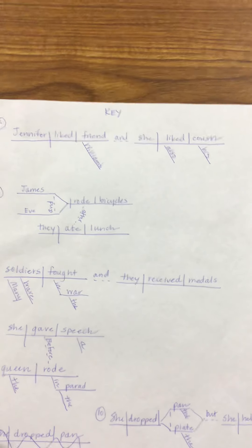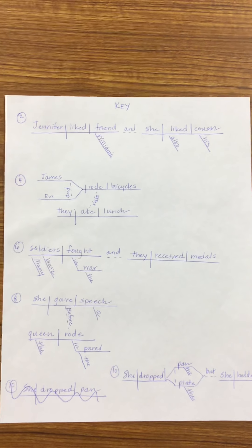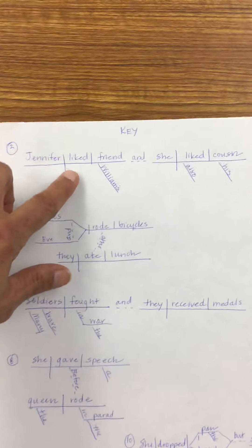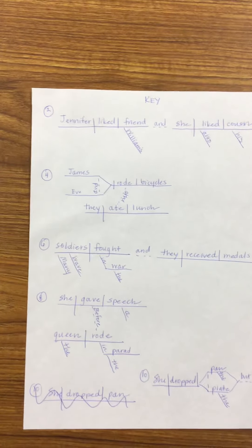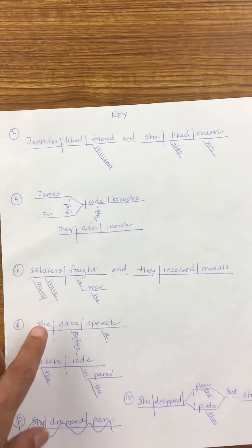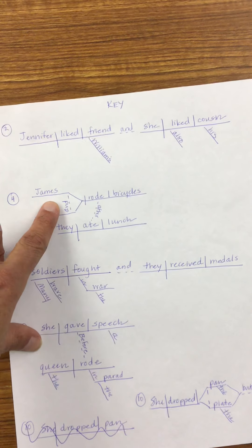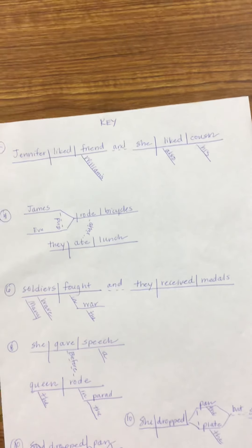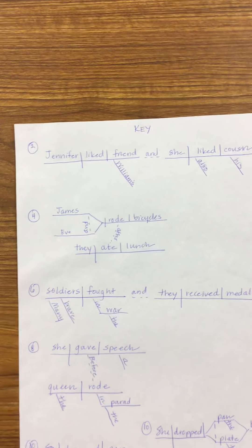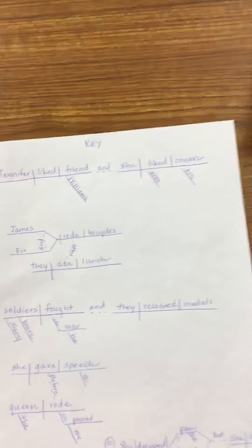You can look at this key for diagramming and see if you've got the same answers. Number two is a compound sentence — your two independent clauses always go on the same plane and your coordinating conjunction goes on a dotted line. When it's a complex sentence, your dependent clause always comes underneath the independent clause. Here we had a 'rocket ship' because we have two subjects, James and Eve, who rode bicycles. When did they ride? After lunch — so you connect verb to verb and put your subordinating conjunction on that dotted line.